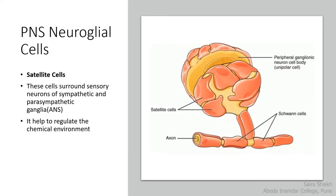The next type of neuroglia cells are present in the peripheral nervous system — that is the satellite cell. This cell surrounds the sympathetic and parasympathetic ganglia and helps to regulate the chemical environment.